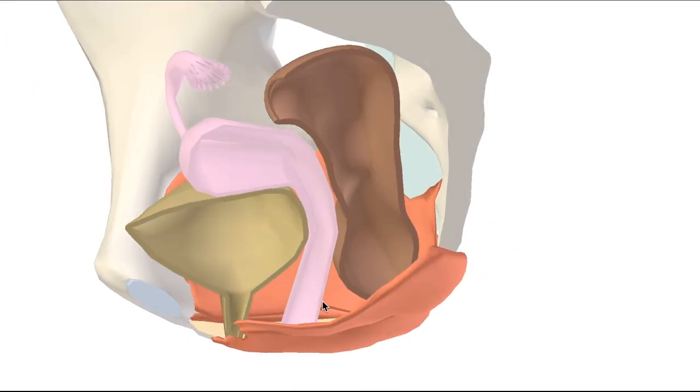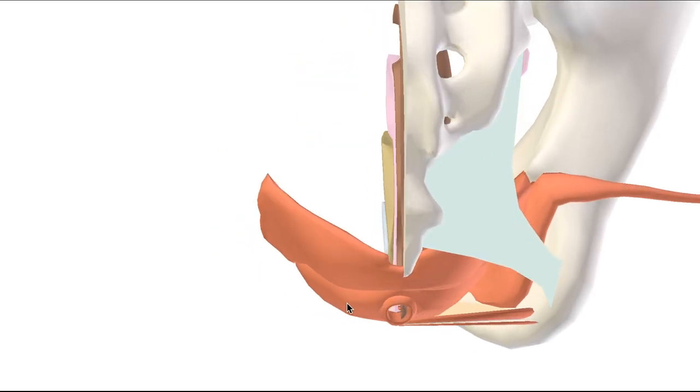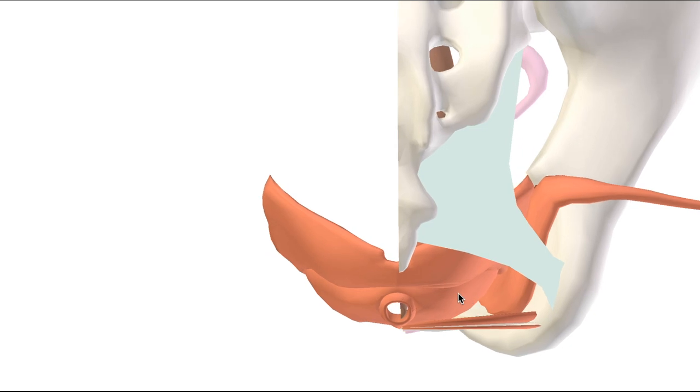The ischioanal fossa are directly lateral to levator ani here. It contains mostly fat and thus acts as a kind of cushion surrounding the hammock.